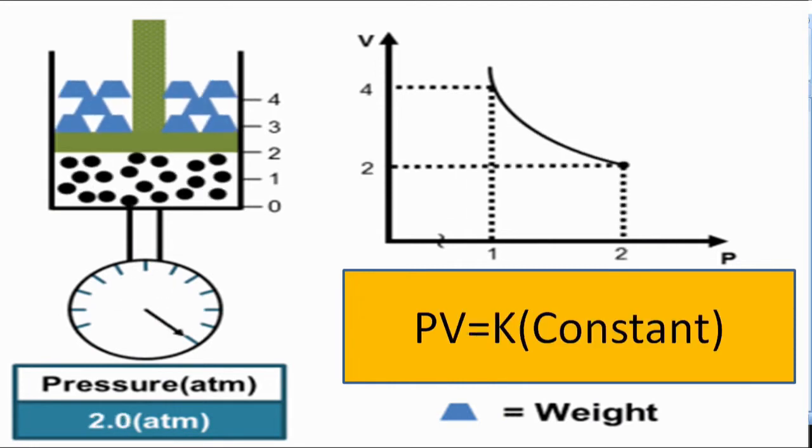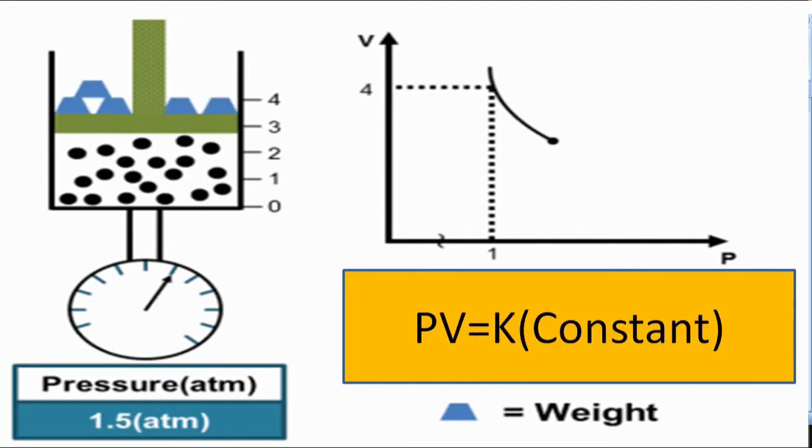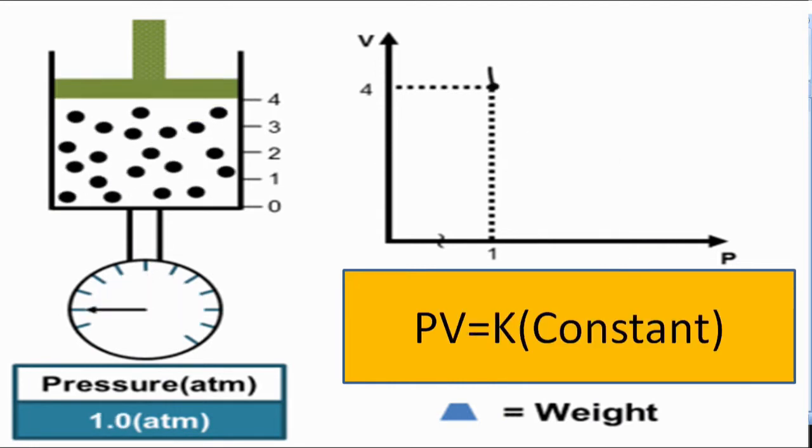The product of pressure and volume is equal to K or constant.